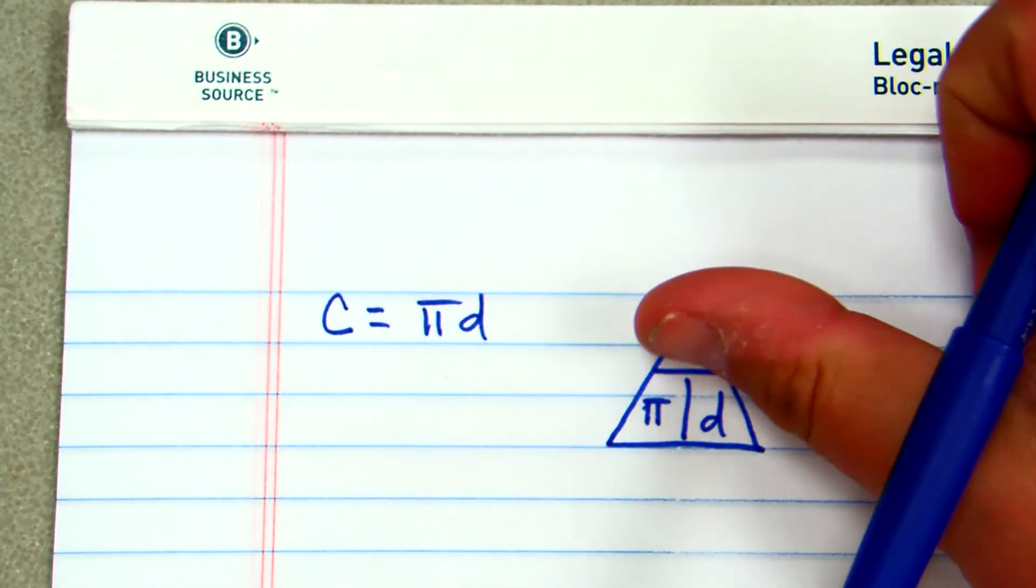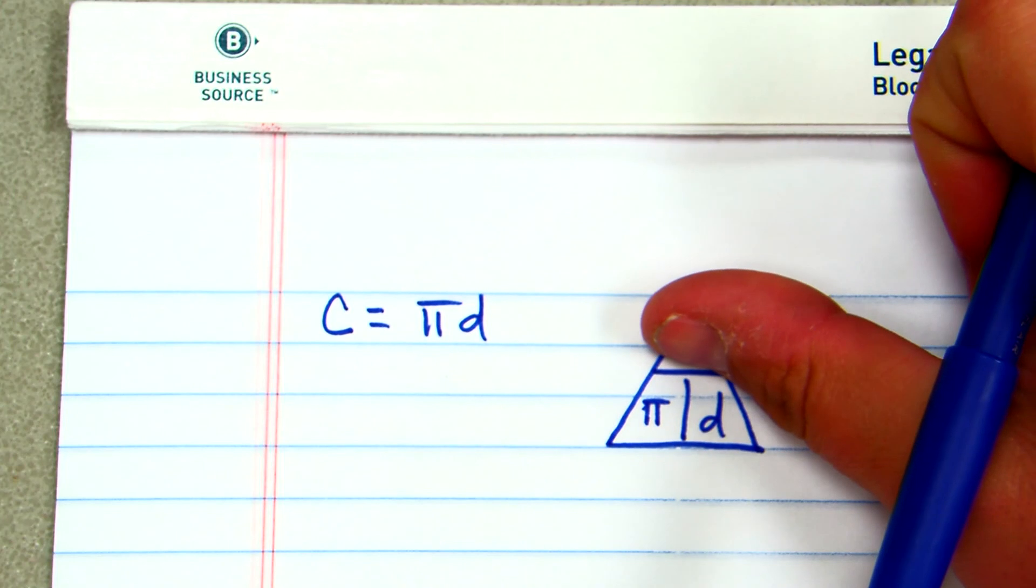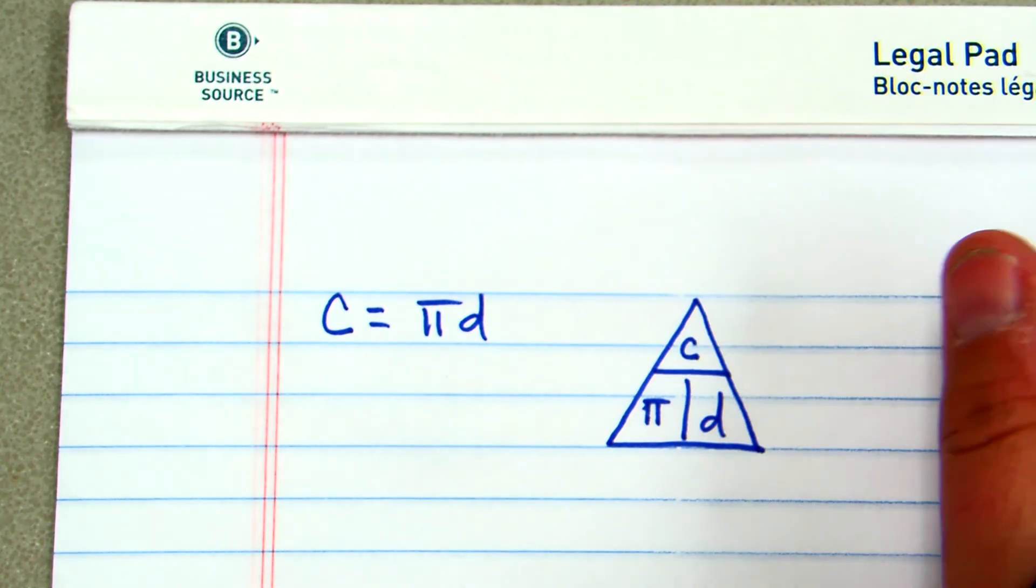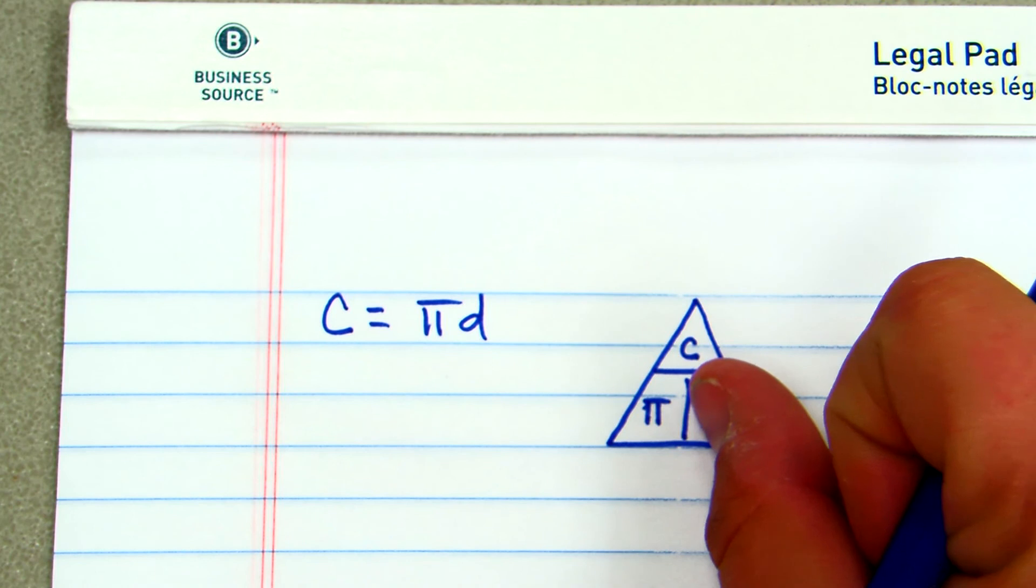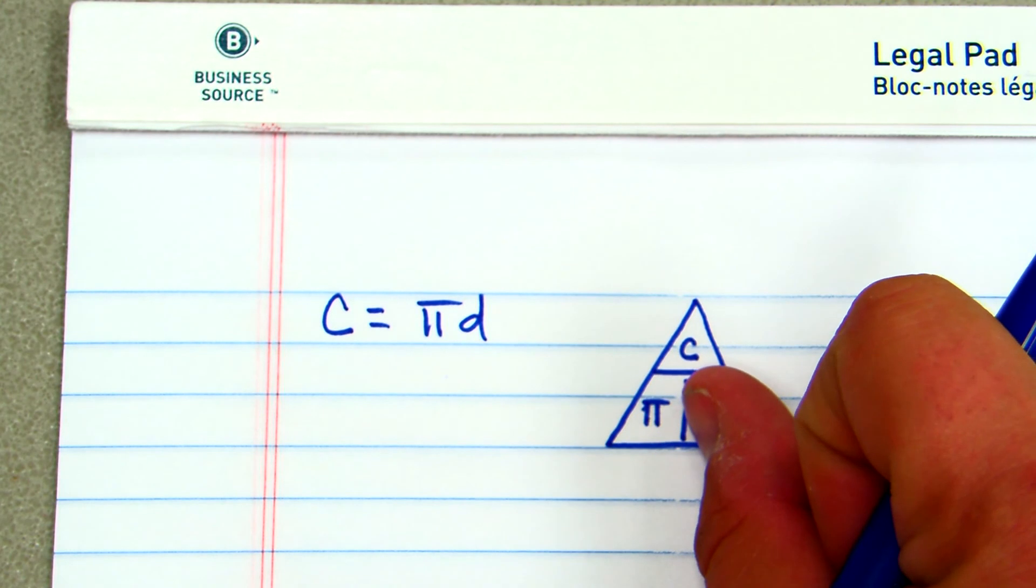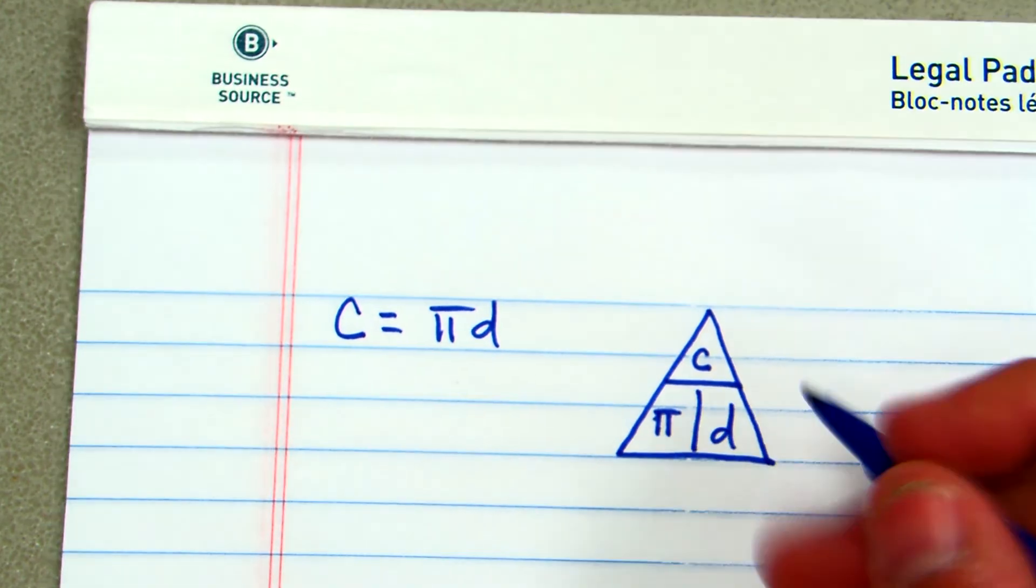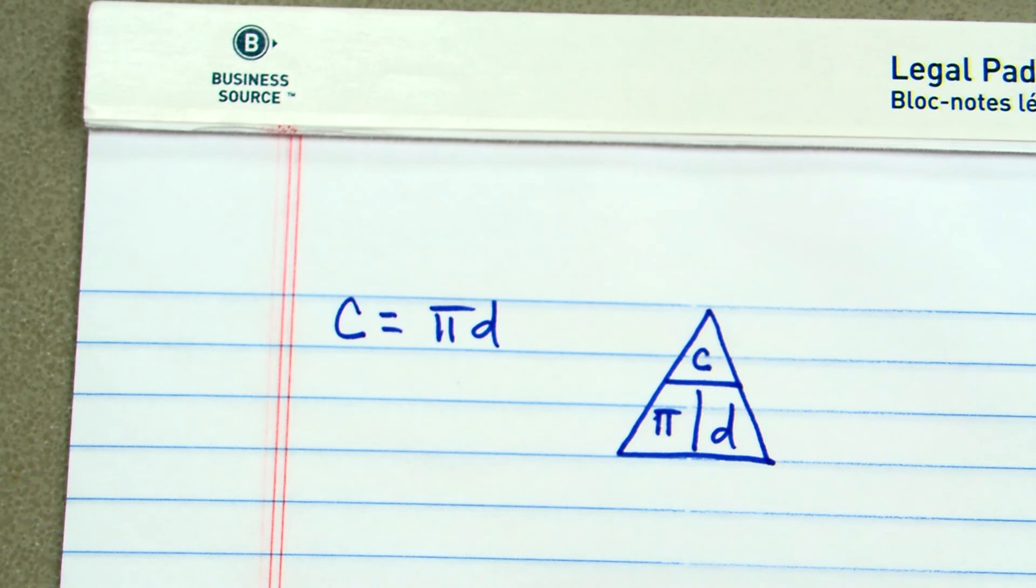That way, if you're looking for circumference, you cover up the c, and you multiply pi times d. If you're looking for the diameter, you cover up diameter, and you divide the circumference by pi.